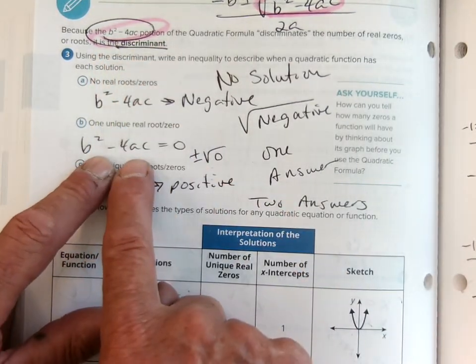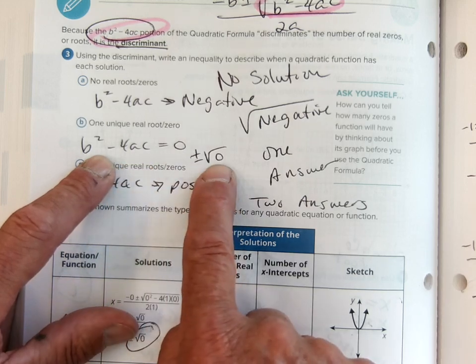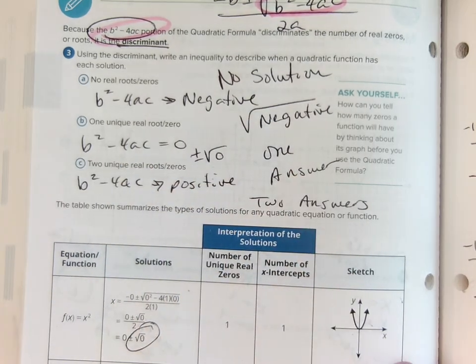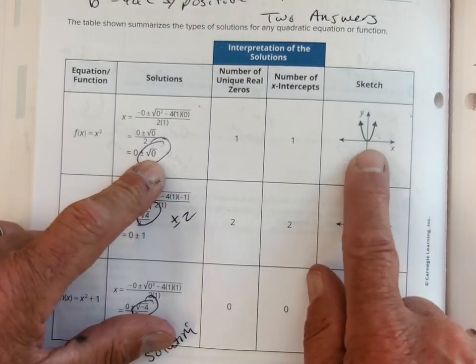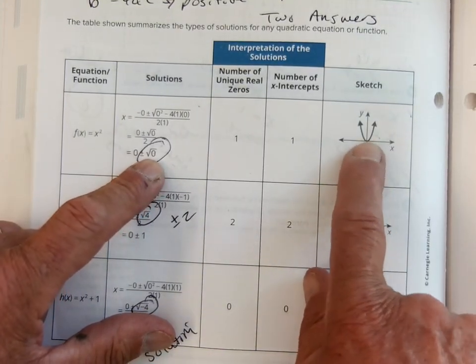If the discriminant b squared minus 4ac equals zero, you have the square root of zero, which is just zero, so there's only one answer. We have an example of it right down here. Got the square root of zero. Here's an example of the graph—it only has one answer, well technically two, but they're the same one.